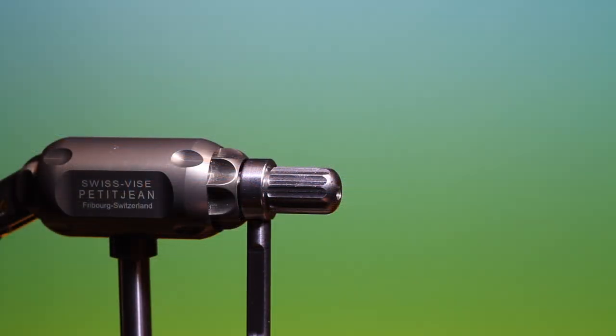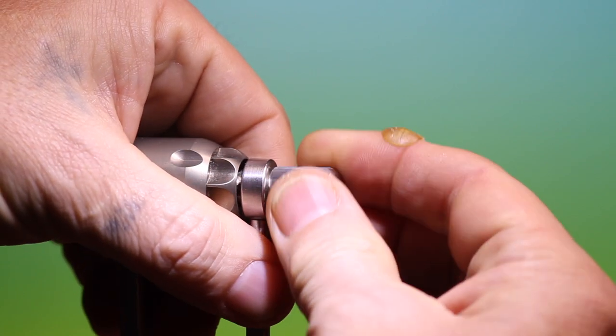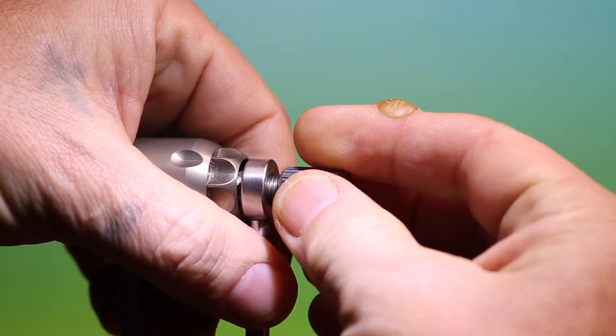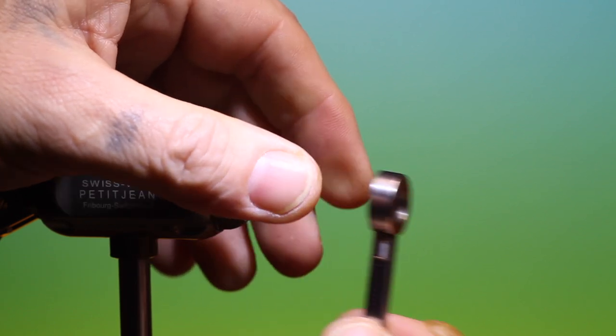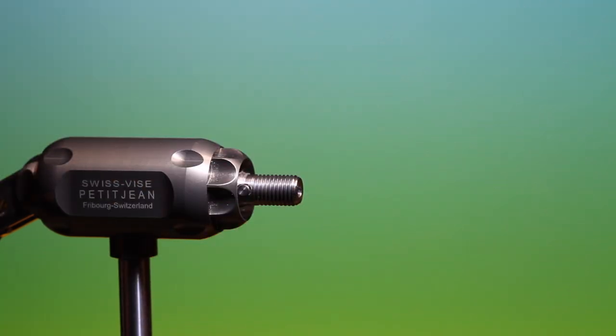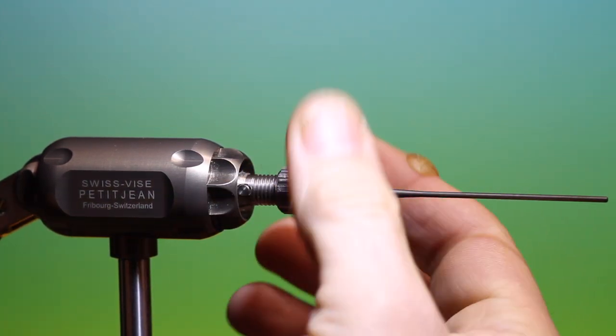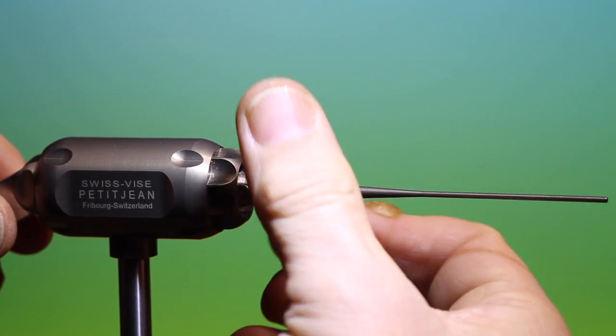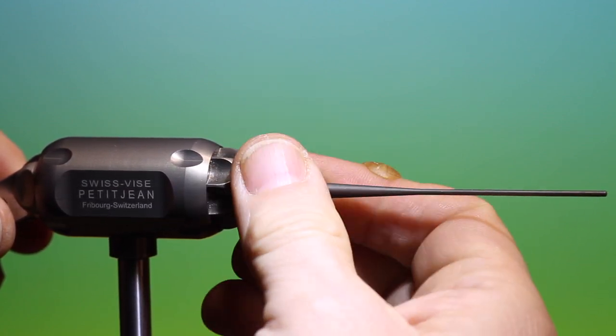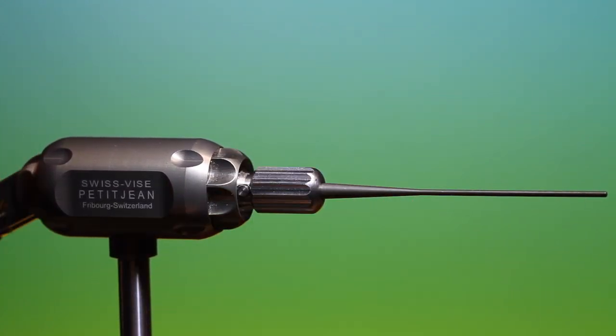Okay, this is the Sunray Shadow Tubefly. If you have a Petit Jean vice, you can remove the handle and put your Tubefly tool on and put the nut back on.